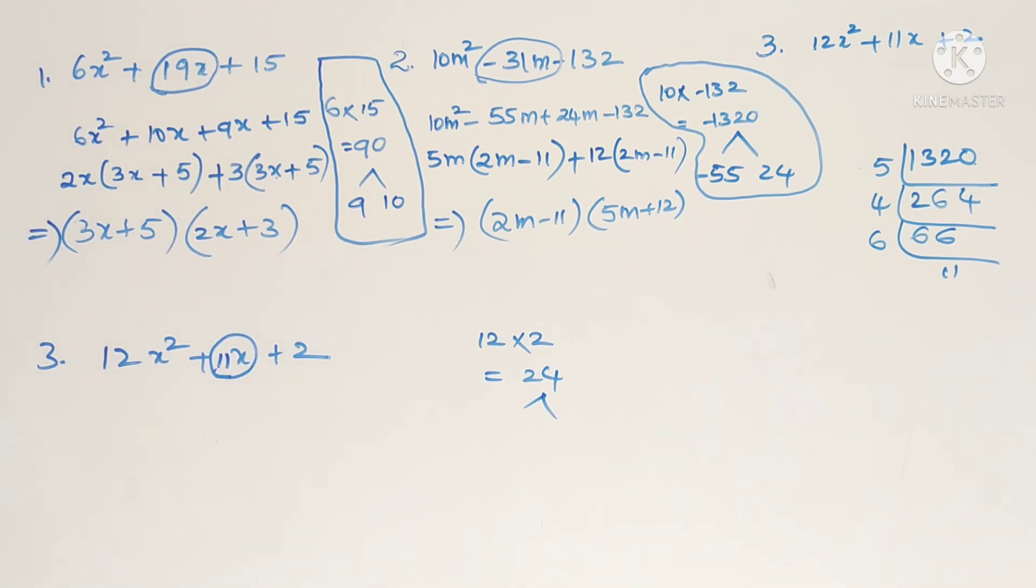So 24's factors we will find. The middle number is 11. So we know 12 twos are 24, but 12 and 2, whether minus or plus, will not give 11. 3 eights are 24, 8 plus 3 is 11. So 6 fours are also 24, but 6 plus 4 is 10, 6 minus 4 is 2. 11 is not coming. So 3 and 8.